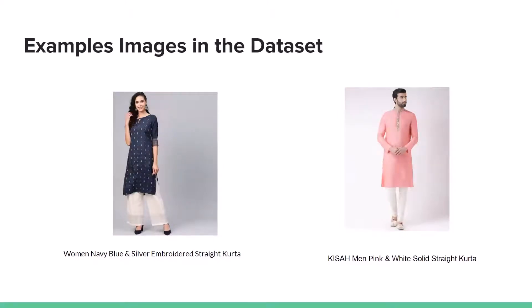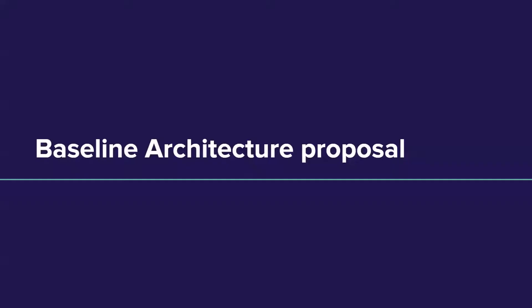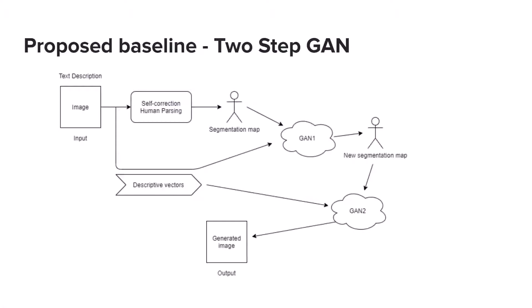This is an example of the dataset. The dataset is neat and clean, and for use of segmentation the background can easily be removed. This is the description fetched along with each image. The baseline architecture proposal is again inspired from FashionGAN. The approach requires an input image and a segmentation of that image. We use a state-of-the-art approach for image segmentation — the self-correction human parsing — which generates a segmentation map highlighting various regions such as the upper torso, lower torso, hands, face, and hair.